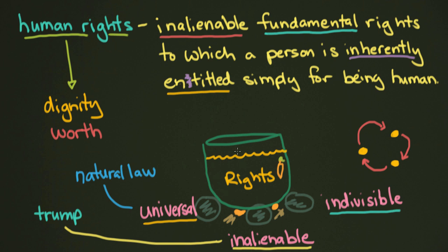So there we have these three properties, our definition, and the foundational ideas — that is sort of how we understand human rights today. We're going to have a much deeper discussion about these things, and in the next video we're actually even going to talk about the history of how we came to this understanding in the first place.